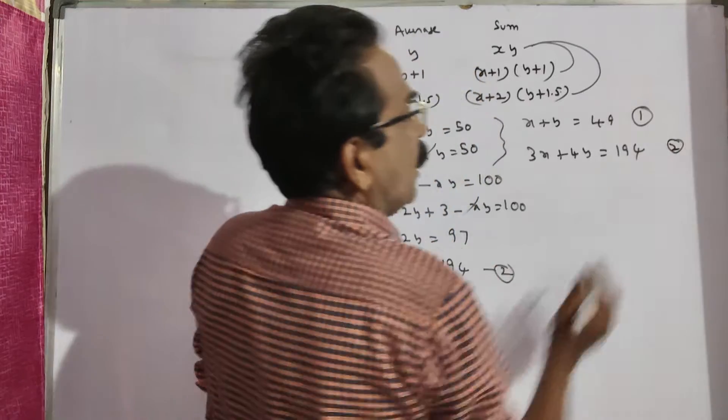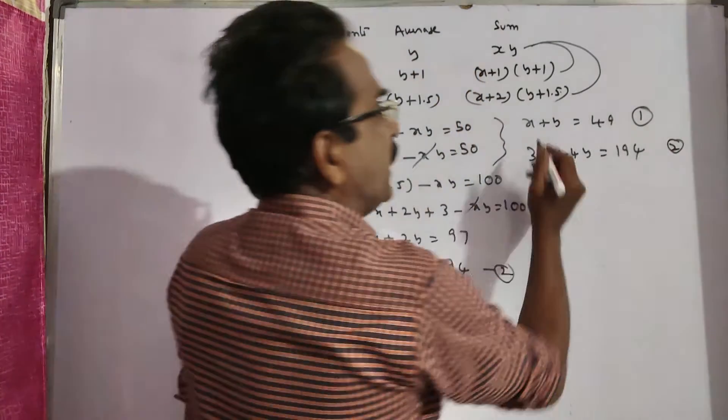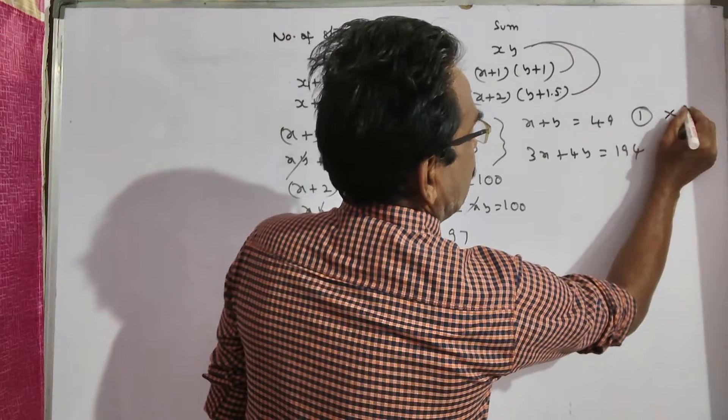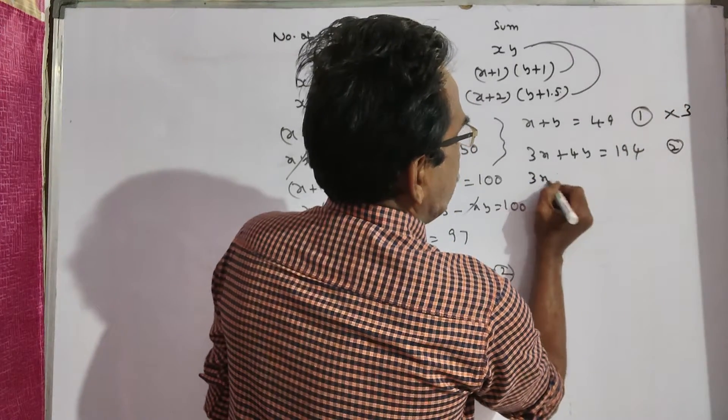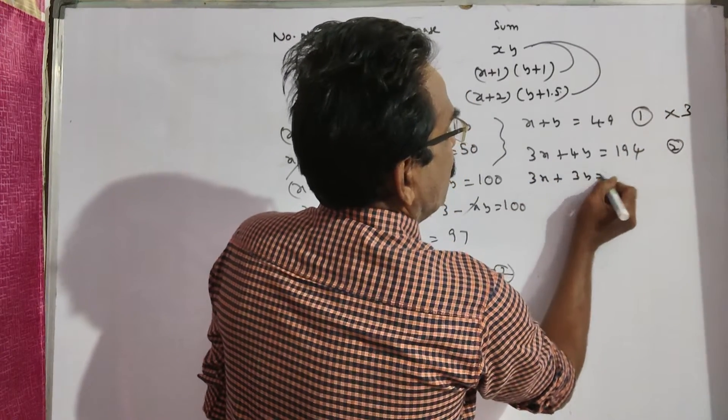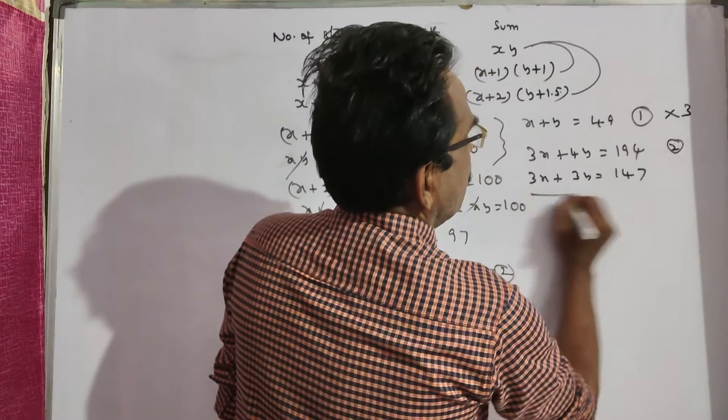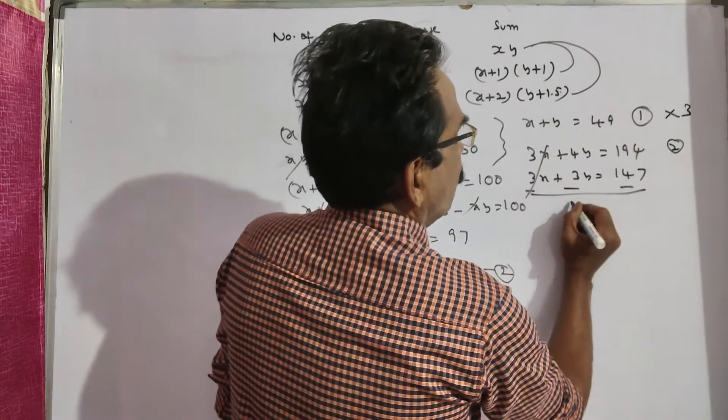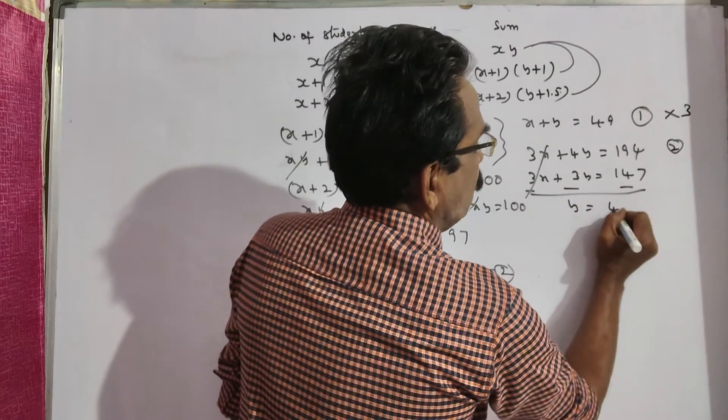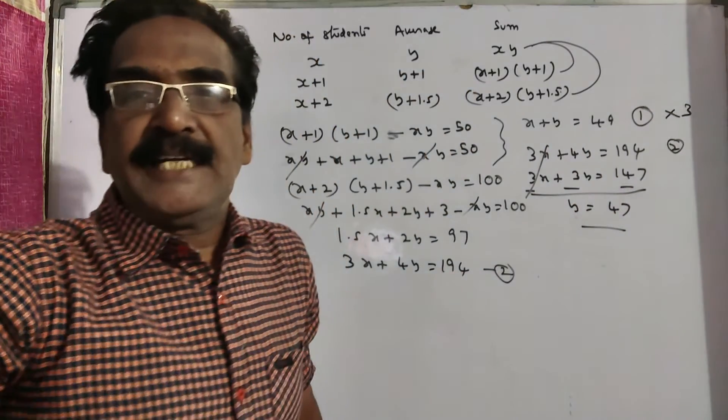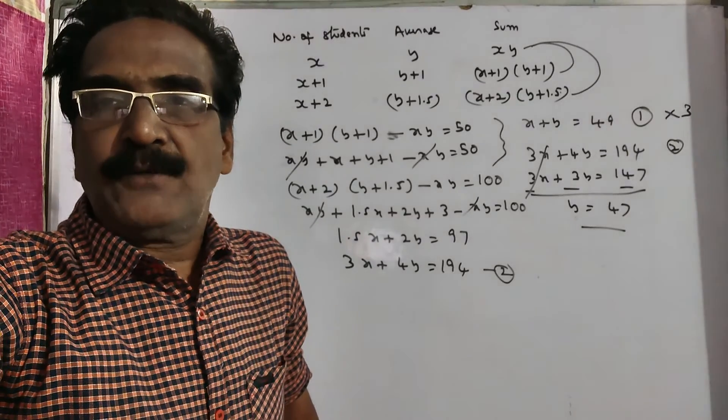Now we want y. So let us multiply the first equation with 3: 3x plus 3y, 3 times 49, 120 plus 27, 147. Subtracting: 4y minus 3y, y is equal to 47. That is your answer, friends. Okay friends, thank you. Have a nice day.